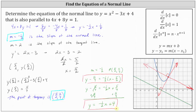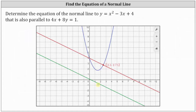Let's go ahead and verify this graphically. We have the graph of the parabola; the green line is the given line, and we just found the equation of the red line, which is normal to the curve and also parallel to the given line. If we sketch the tangent line at this red point, notice how the normal line is perpendicular to the tangent line and also parallel to the given green line. I hope you found this helpful.